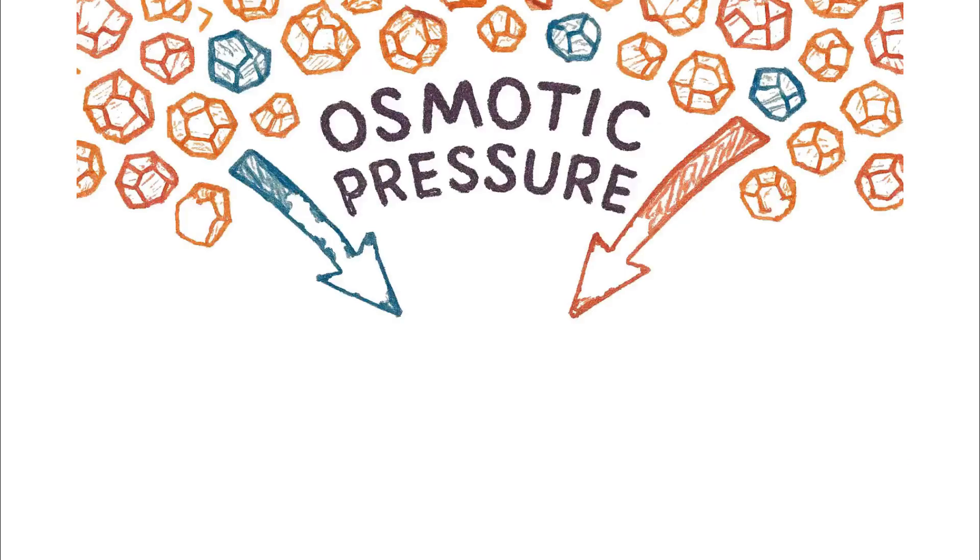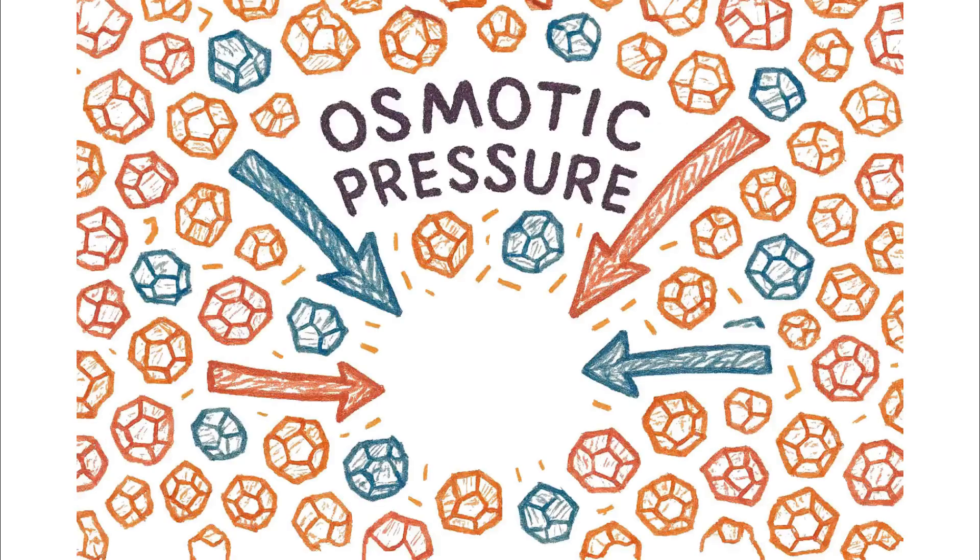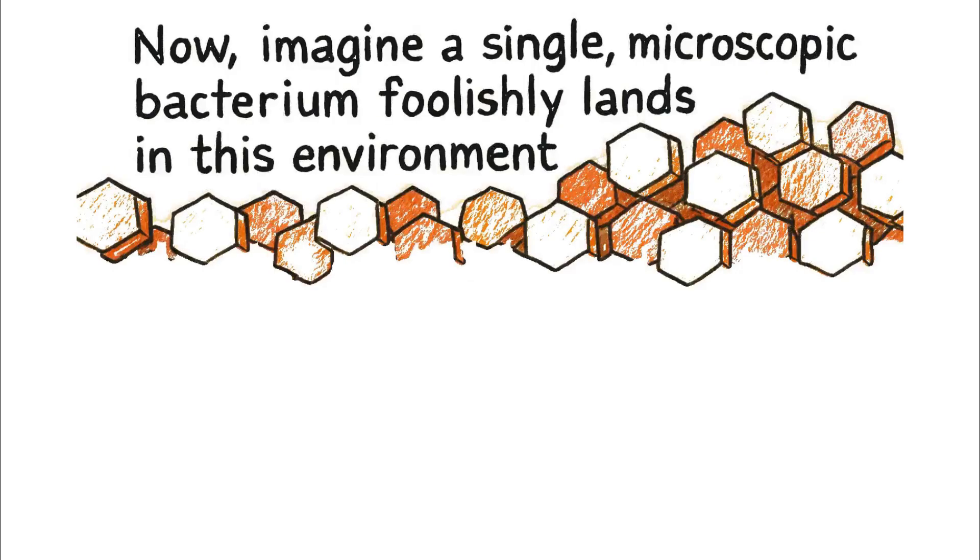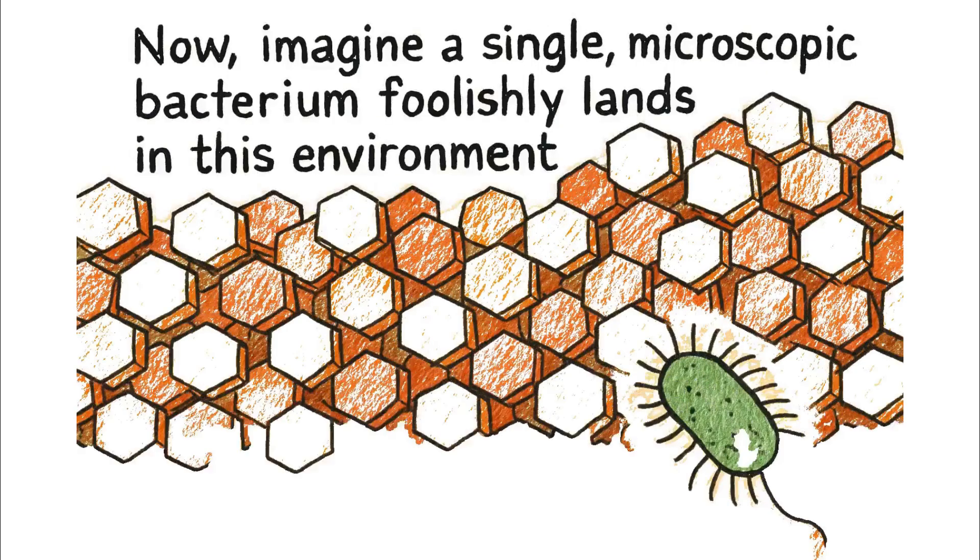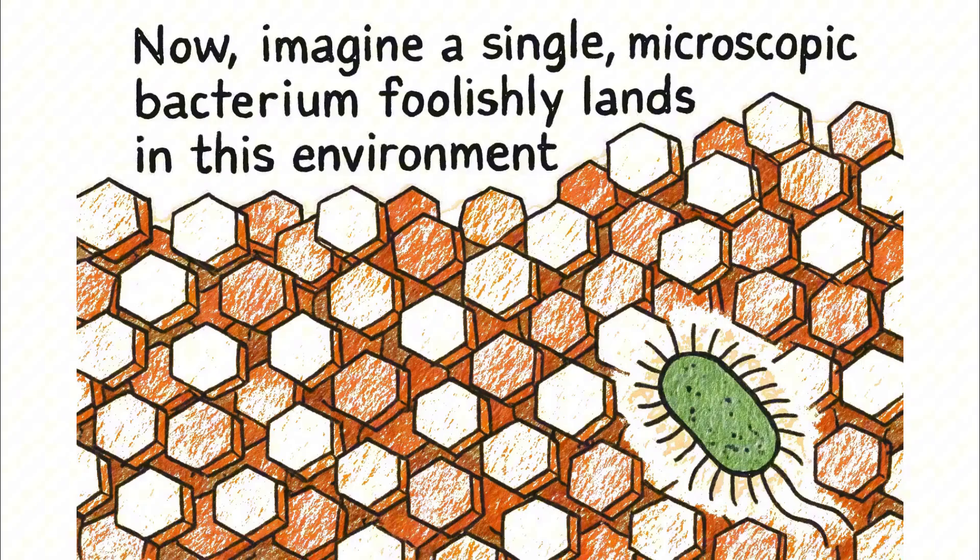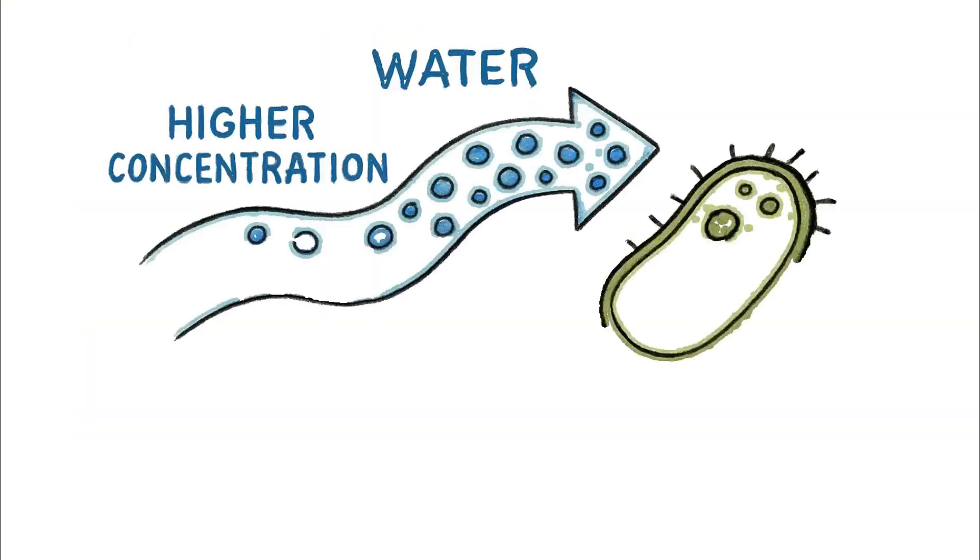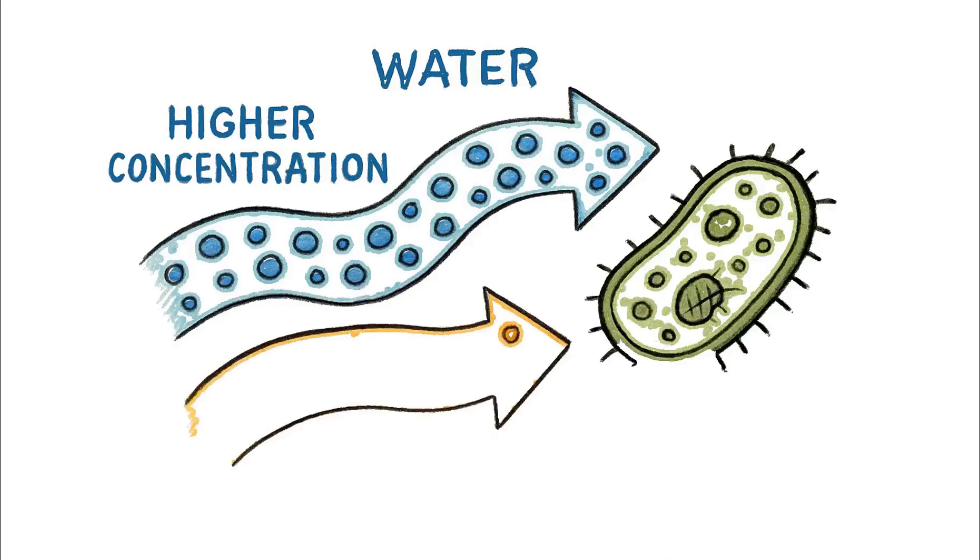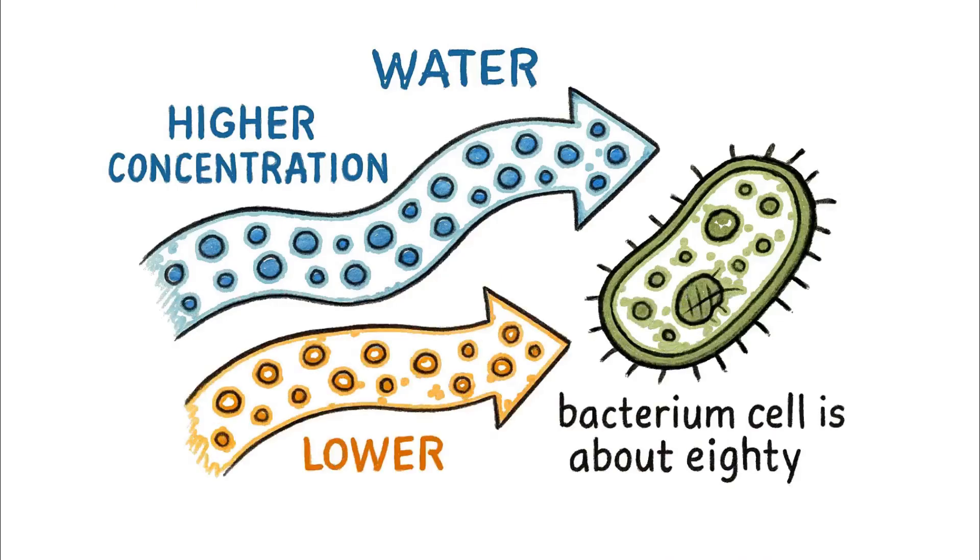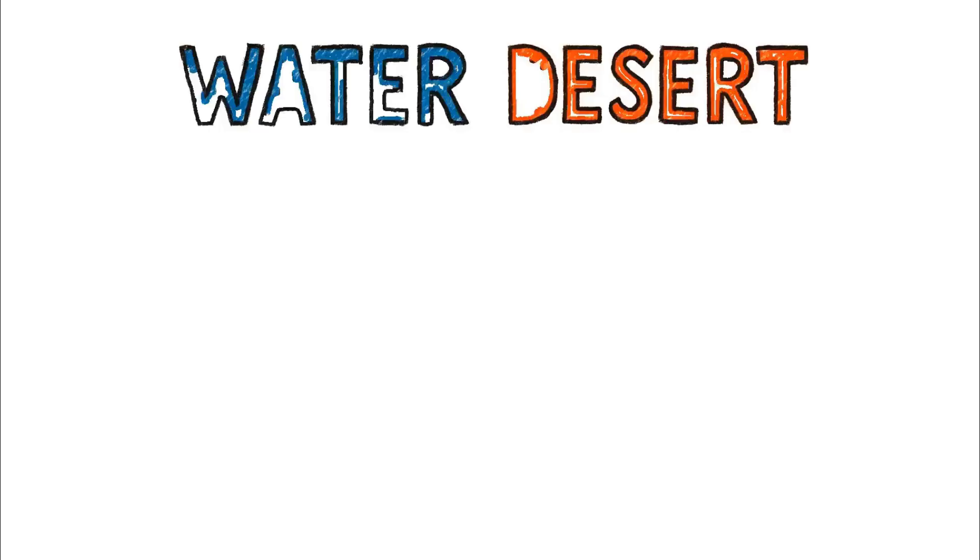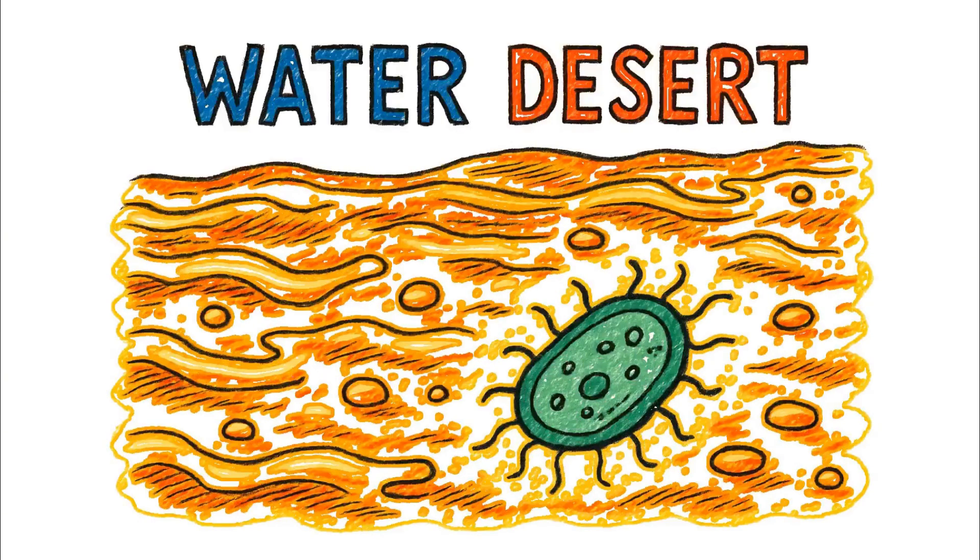This creates a powerful physical force known as osmotic pressure. Now imagine a single microscopic bacterium foolishly lands in this environment. Biology dictates that water will always move from an area of higher concentration to an area of lower concentration, and a bacterium cell is about 80% water. The honey, by contrast, is a water desert.